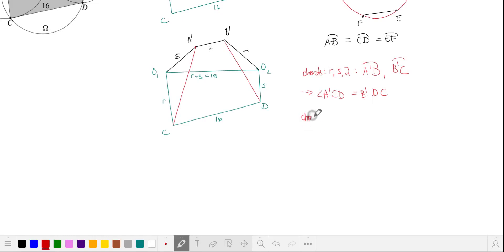If you look at the adjacent chords that have lengths R, S and 16, we have angle B prime, A prime, C is equal to angle A prime, B prime, D. Redrawing our shape, we have that quadrilateral A prime, B prime, D, C is an isosceles trapezoid. The bases are 2 and 16.